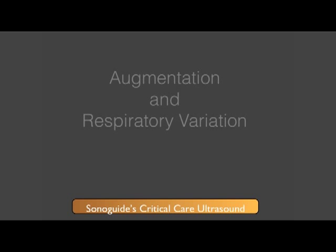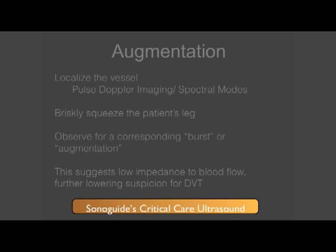In this chapter, I will discuss the use of augmentation and respiratory variation to further evaluate for the presence or absence of a DVT on bedside ultrasonography. Augmentation is a relatively easy technique to perform. I will first provide an overview before showing you how to perform this technique.